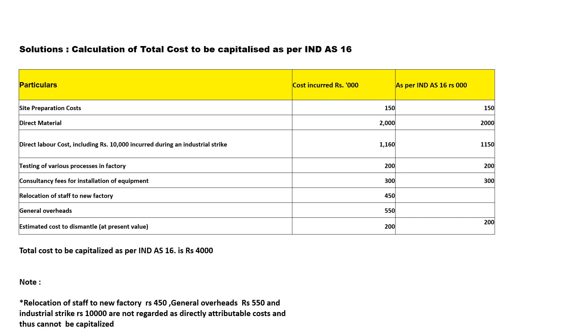Next is testing of various processes in the factory — this is related, so we are going to include it. Then, consultancy fee for installation of equipment: 300 — we are going to take that as well.